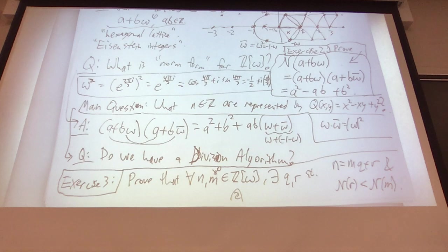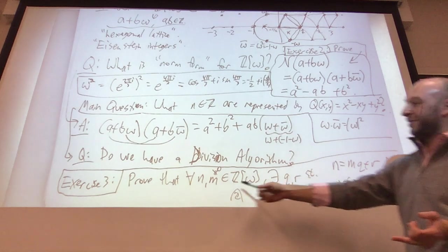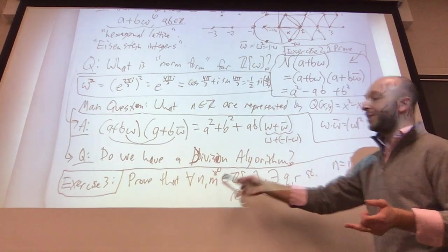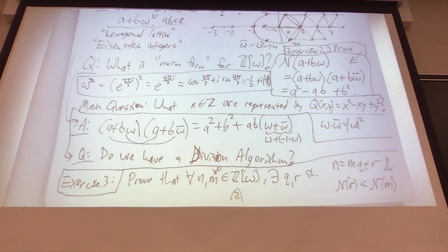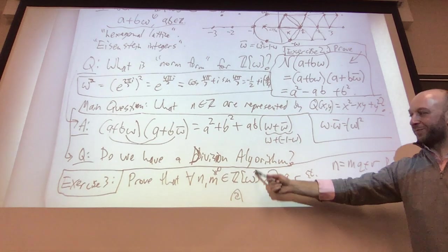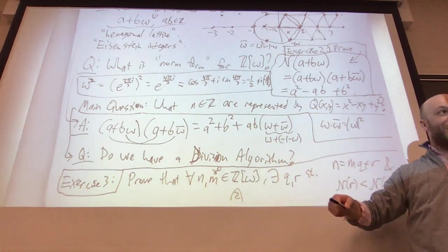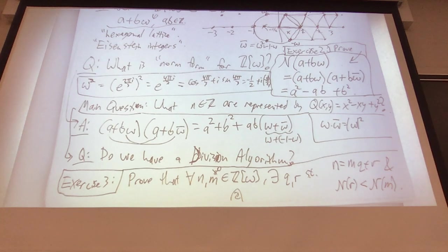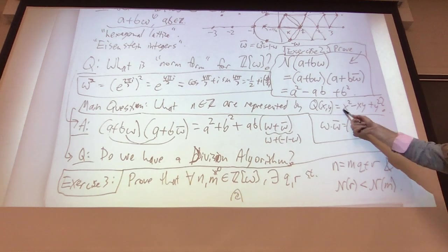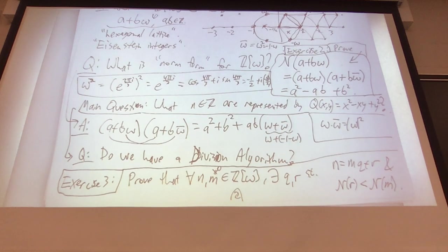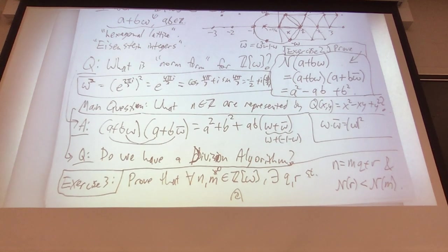What we'll do next time: given this division algorithm, we'll reprove that we have a Euclidean algorithm, show that ideals in this ring are principal, prove unique factorization, and from that determine which primes and then which integers in general can be represented by the quadratic form x squared minus xy plus y squared.